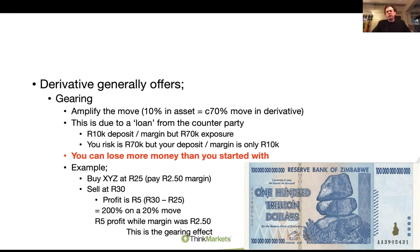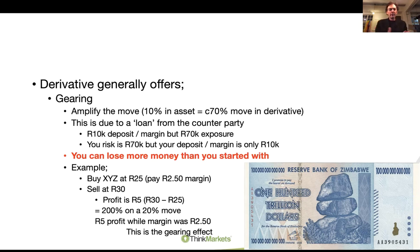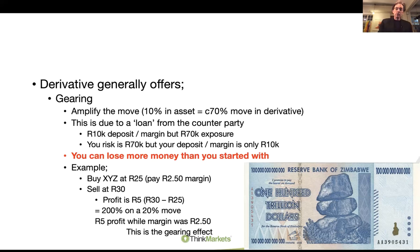This is the attraction of a derivative - it enables you to enhance the amount of risk that you can take. That is also the risk of the derivative, because you've rocked up with 10,000 but you've got 70 or 100,000 rand exposure. You've got a lot more risk on the table than you actually have cash for. If you buy shares with 10,000 rand, you get 10,000 rand worth of shares. And if that share goes bust, you've lost your 10,000, but you've only lost your 10,000. With the derivative, your risk is higher - you can lose more than you start with.